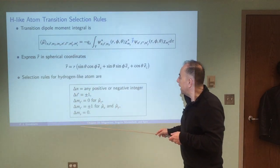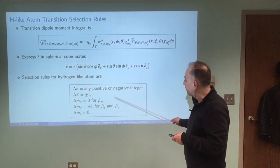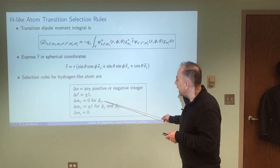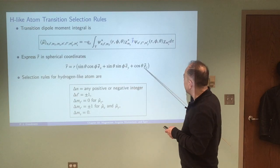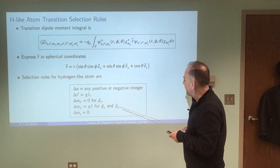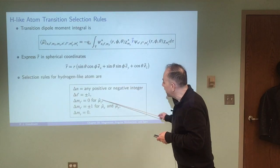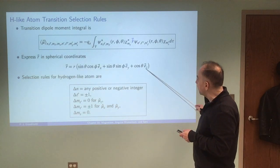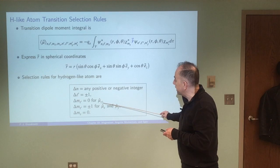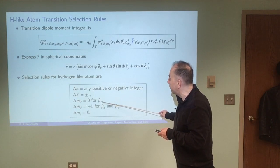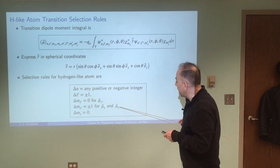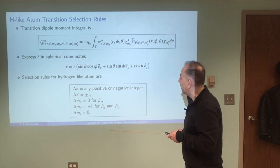Delta N can be any positive or negative integer. Delta L can only be plus or minus one. If you're looking at the Z component of the electric dipole moment then delta ML can only be zero. So if the light is only interacting with the Z component then it's a delta ML of zero. And then if it's interacting with the X or Y components then delta ML can be plus or minus one.